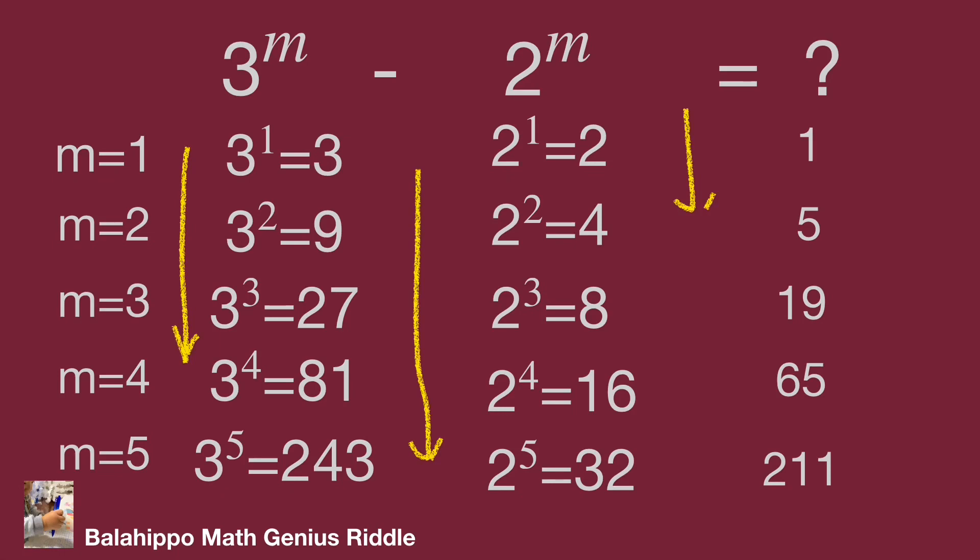While m value increases, the value of 3 power m minus 2 power m increases. Our question is 3 power m minus 2 power m equals 65. While m is larger than 4, the value for 3 power m minus 2 power m will be much larger than 65. So m equals 4 is the only answer.